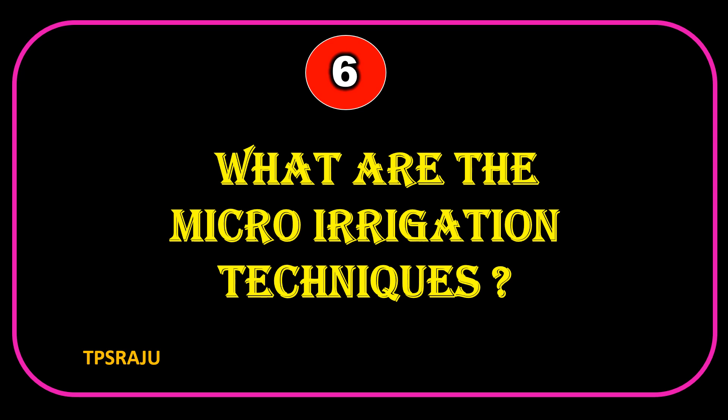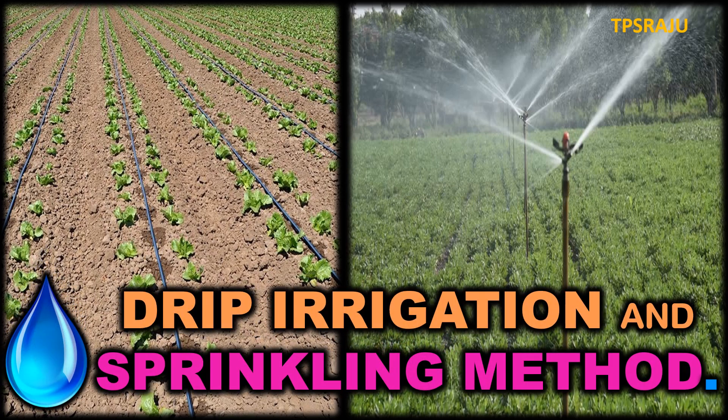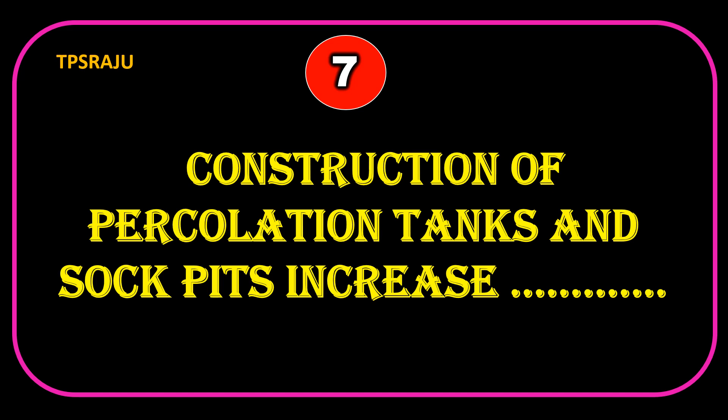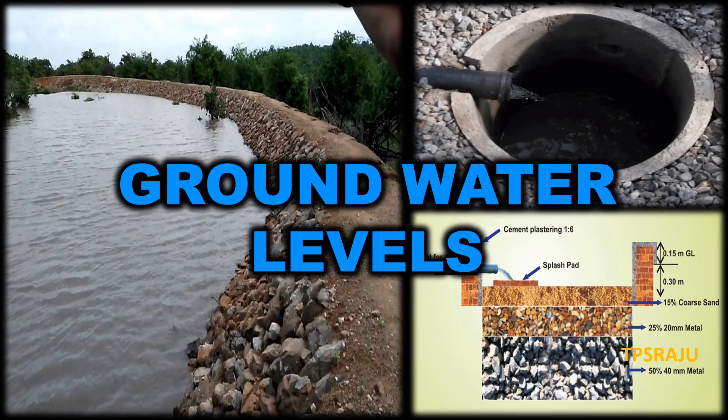What are the micro-irrigation techniques? Drip irrigation and sprinkling method. Construction of percolation tanks and soak pits increases groundwater levels.